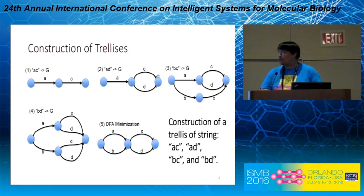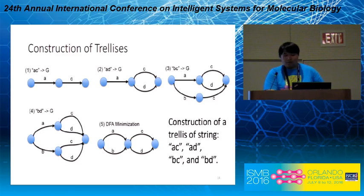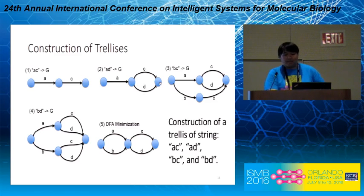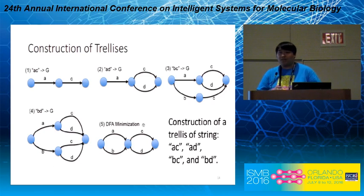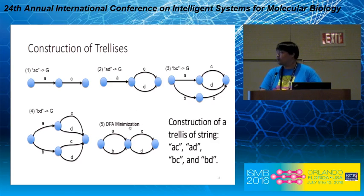Here we give a simple illustration of the construction of the trellis on four data inputs: AC, AD, BC, and BD. First, we add AC and AD into the trellis, where we identify the shared prefix A. Then we add BC and BD into the trellis, and similarly we identify the shared prefix B. Finally, we run the DFA minimization algorithm, which identifies the shared suffixes, giving us this very efficient and compact representation in the end.